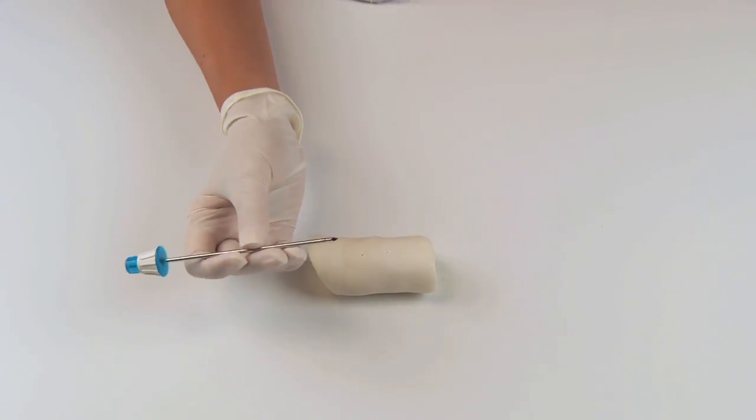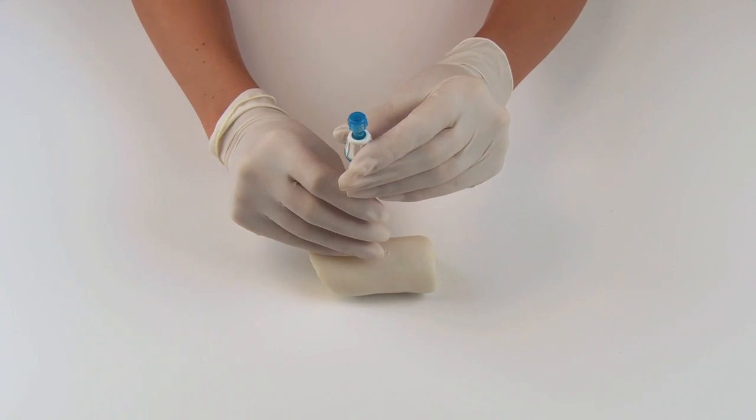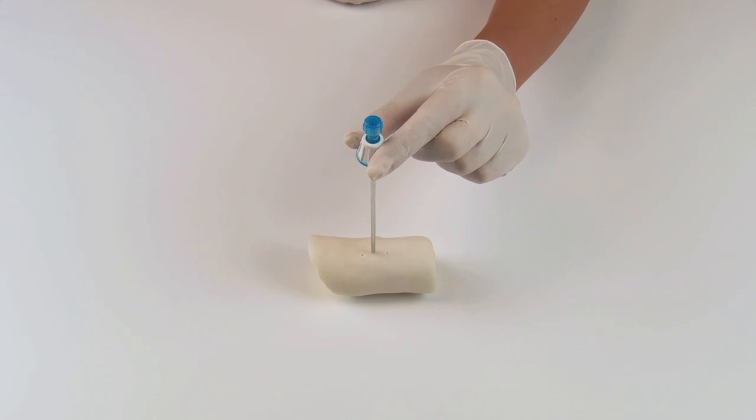Press the penetration cannula with the stylet firmly down until the tip reaches the bone. Remove the stylet while holding the penetration cannula firmly against the bone to maintain the position.